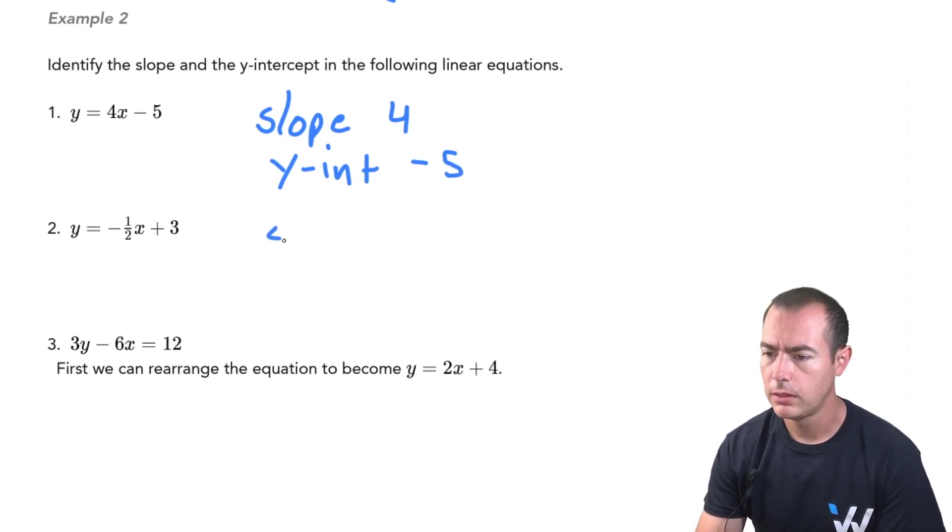Alright, on to the next one. We can see that the value sitting right next to the x is a negative one half, so that is going to be our slope. And in terms of the y-intercept, looks like it's going to be a positive 3.